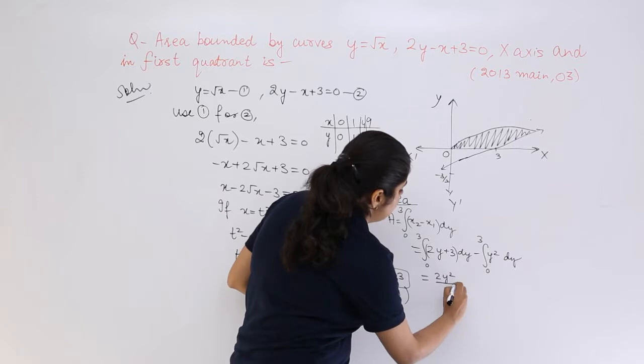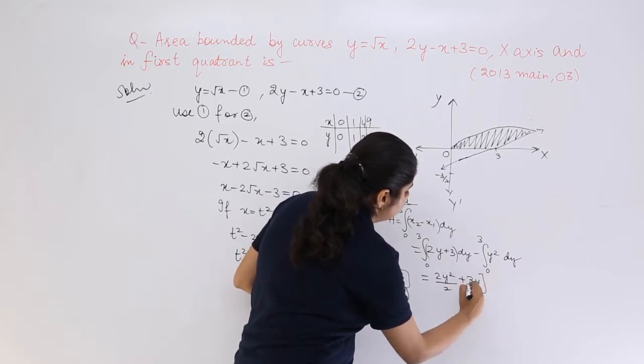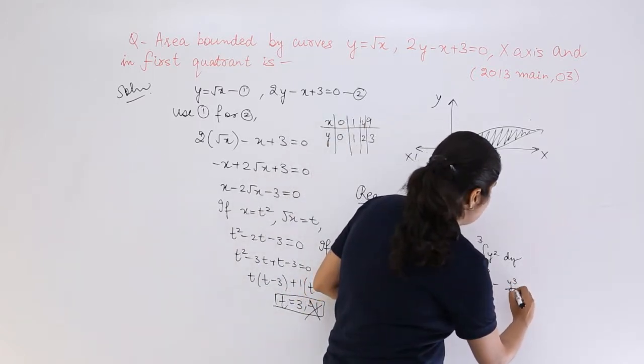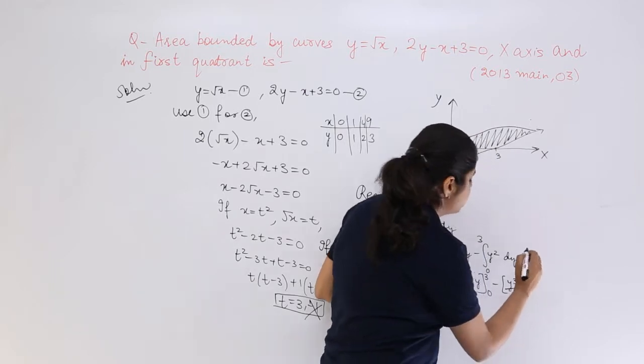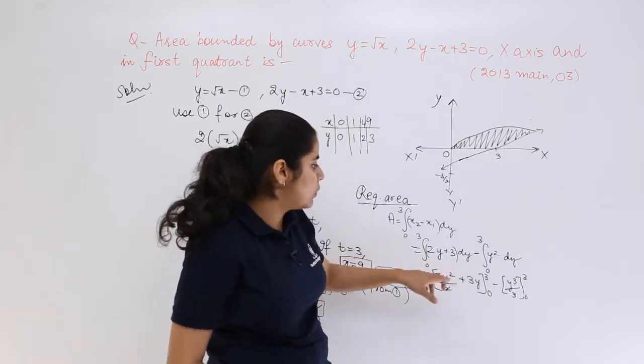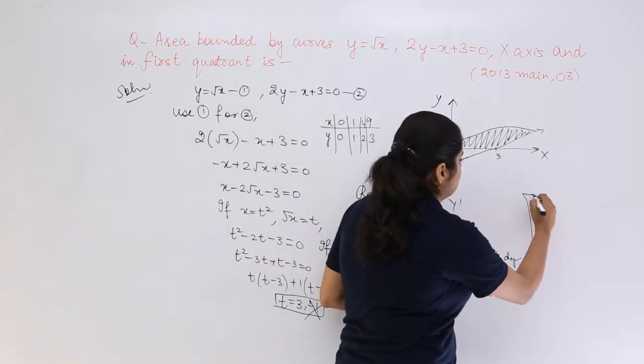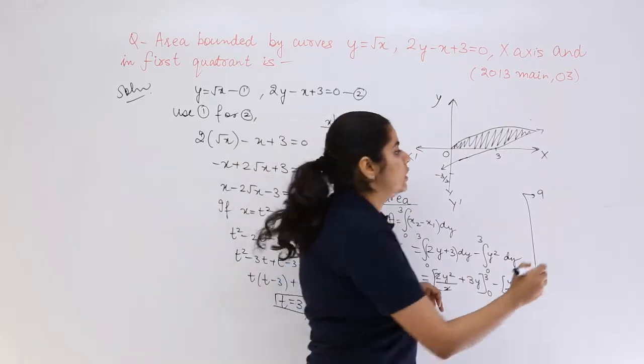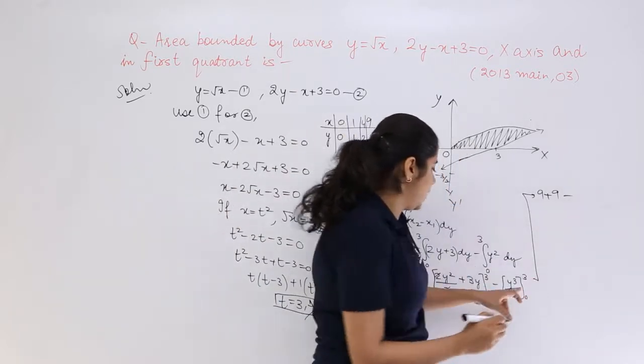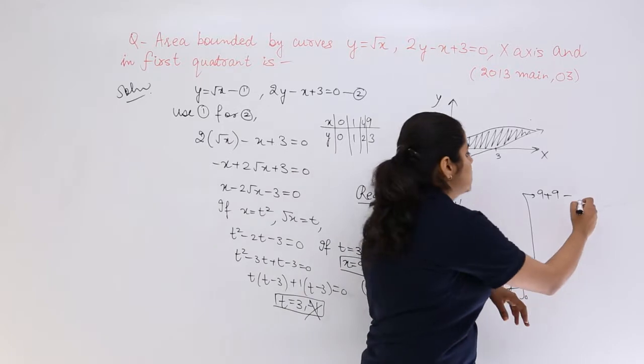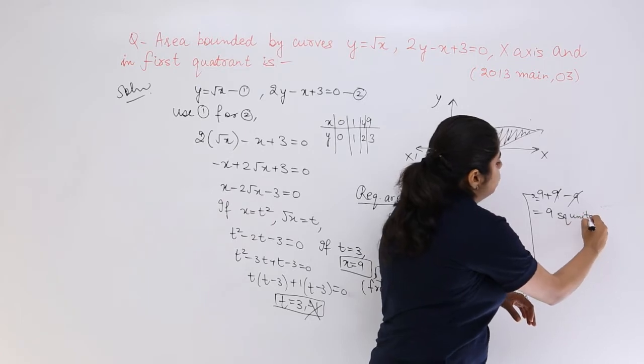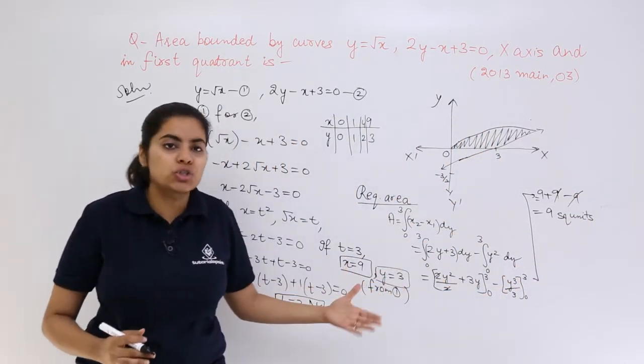What should be the answer? 2 times y squared by 2 plus 3y, put the limits from 0 to 3, minus y cubed by 3, put the limits from 0 to 3. What is the answer? See this 2 and 2 gets cancelled. Now 3 squared is 9, I am just solving it here - 3 squared is 9, plus 3 threes is again 9, then put minus and 0 vanishes. Then here it is minus sign - 3 cubed is 27 upon 3 which is 9 and you know 0 vanishes. So 9 square units should be my answer to this question.